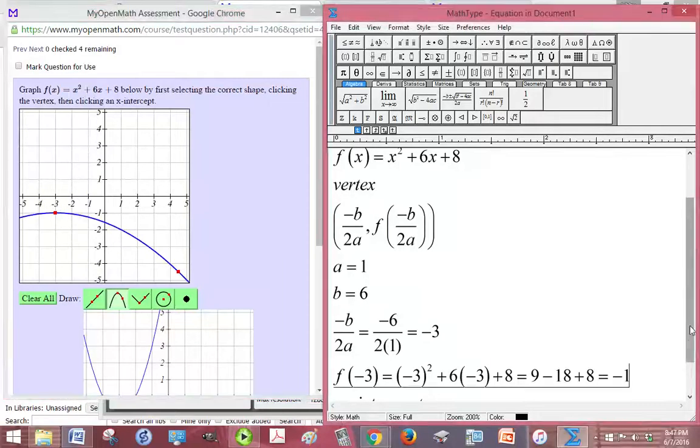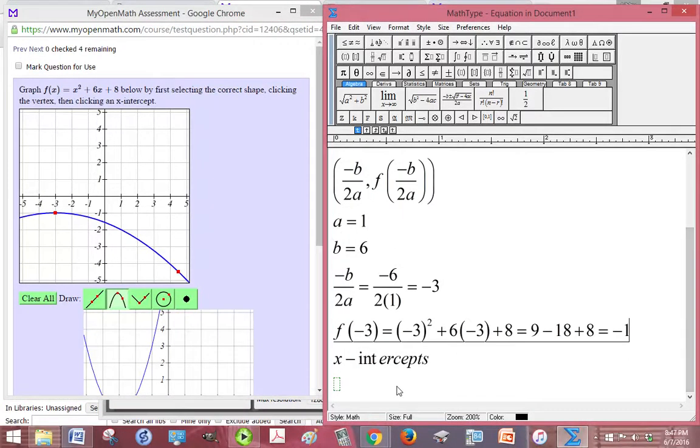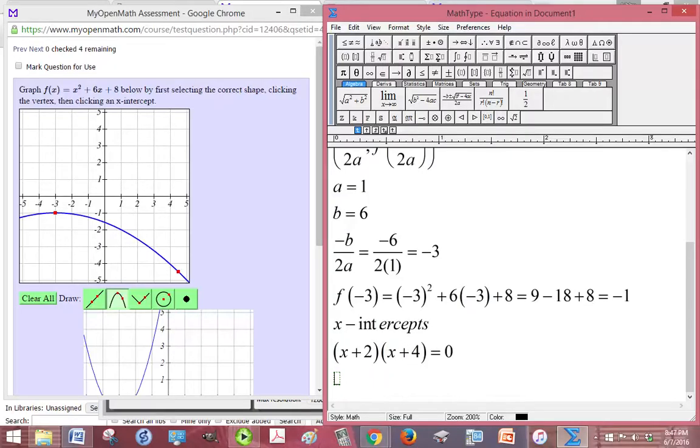But we still need to find at least one of the x-intercepts. This one factors nicely into x plus 2 and x plus 4. And if we set that equal to 0, we get two values, we get negative 2 and negative 4.